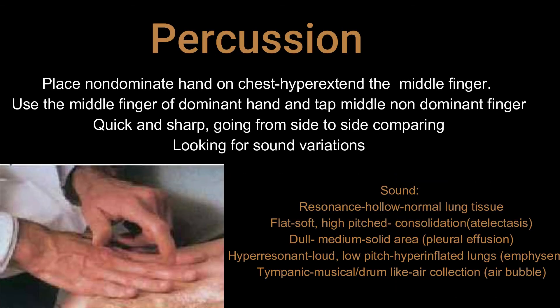Next, we go on to percussion. Percussion is when you place your non-dominant hand on the patient, hyperextend the middle finger, and then take your dominant middle finger and tap it on your non-dominant middle finger. As you see in the picture below, that's exactly what the provider is doing. It's going to be a quick and sharp tap, and you want to go from side to side comparing. You're looking for sound variations. Normal sound is resonance, which is going to sound hollow and is heard over normal lung tissue.